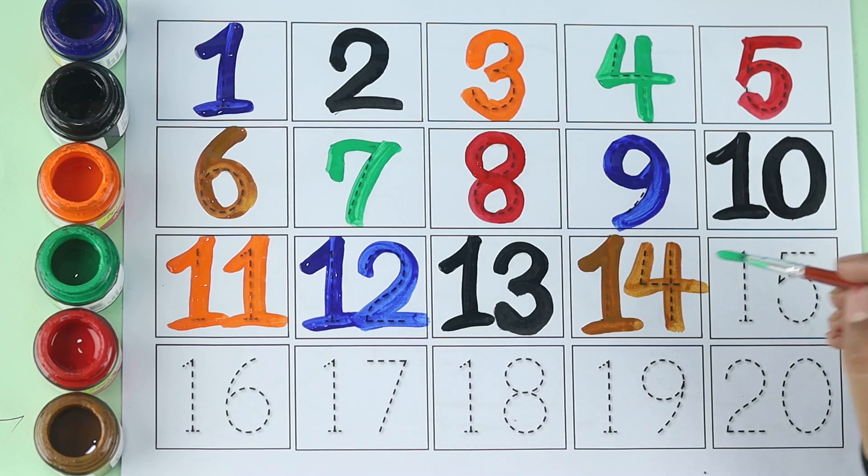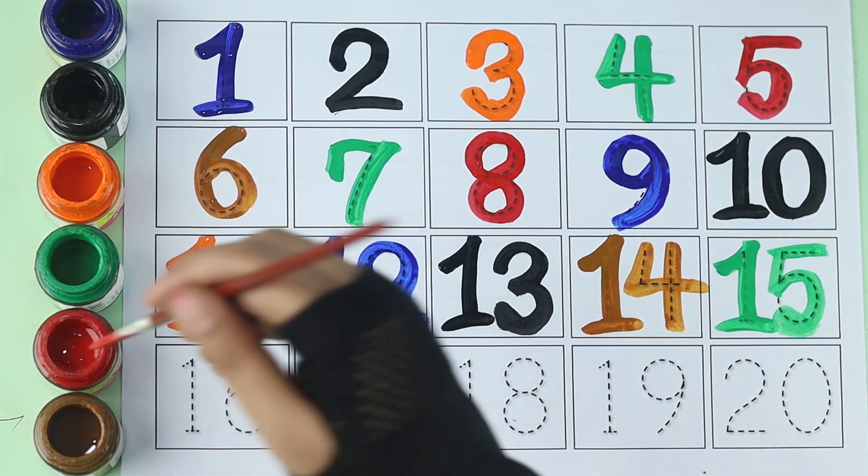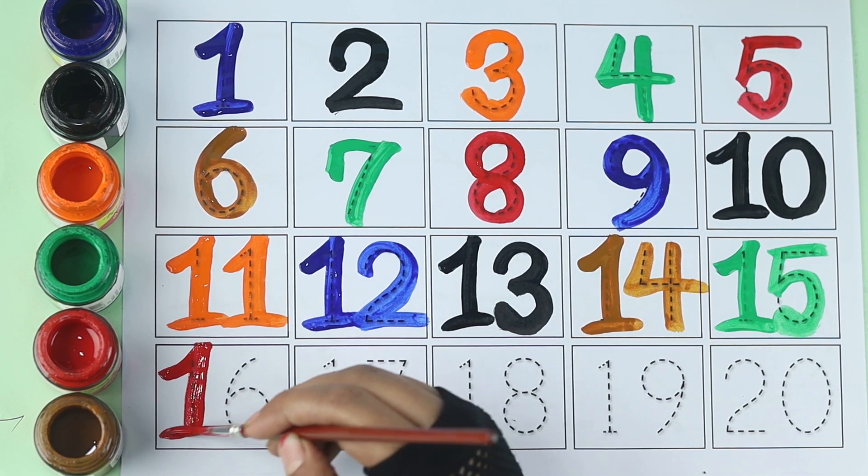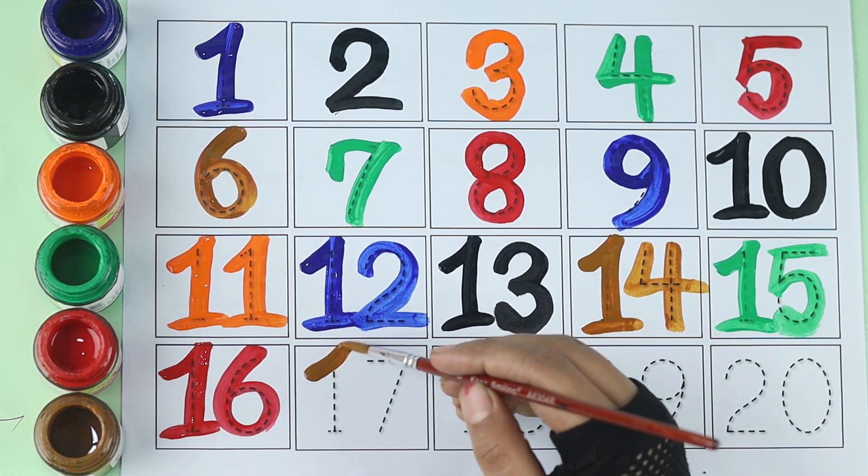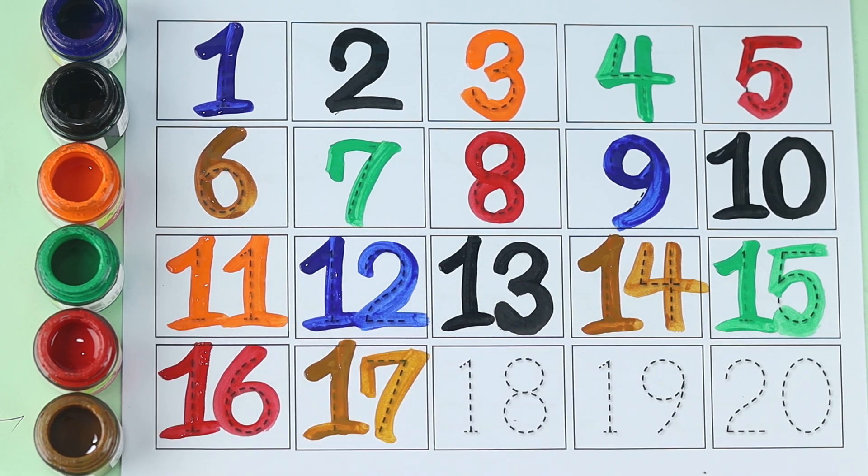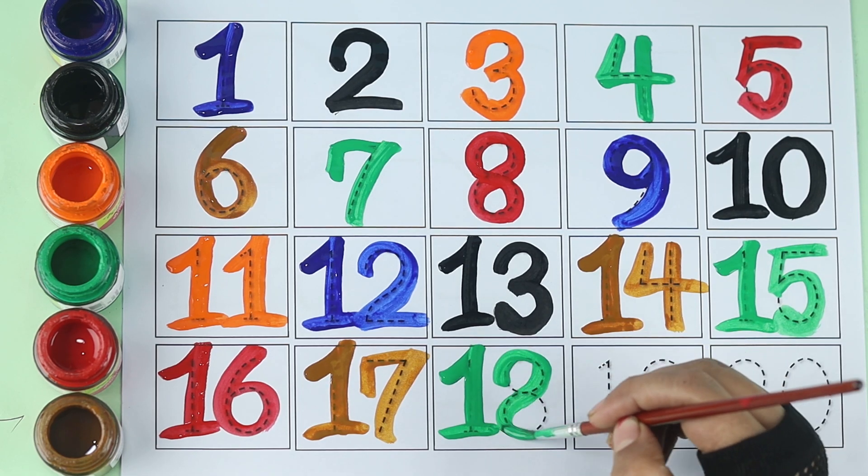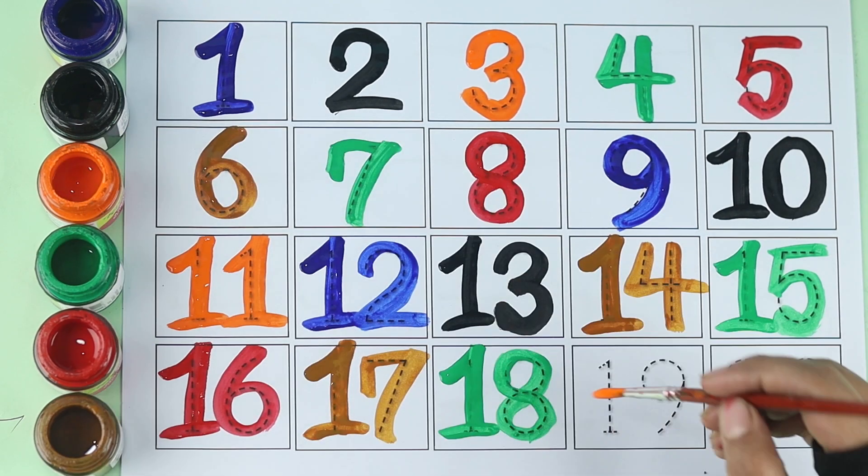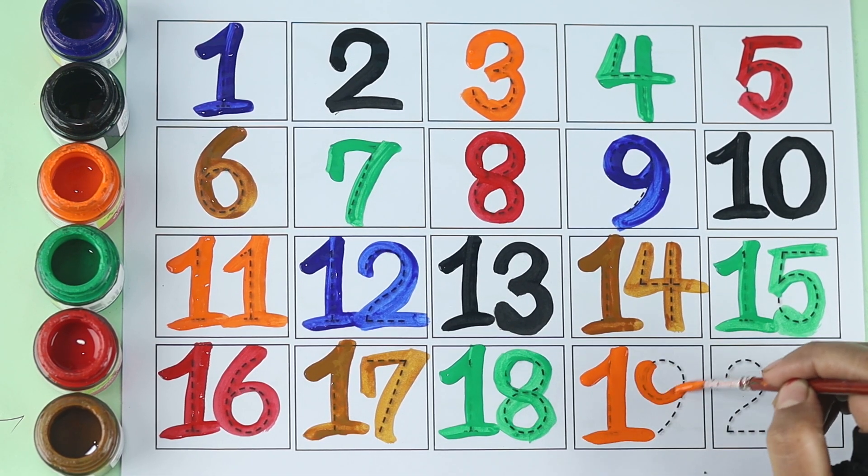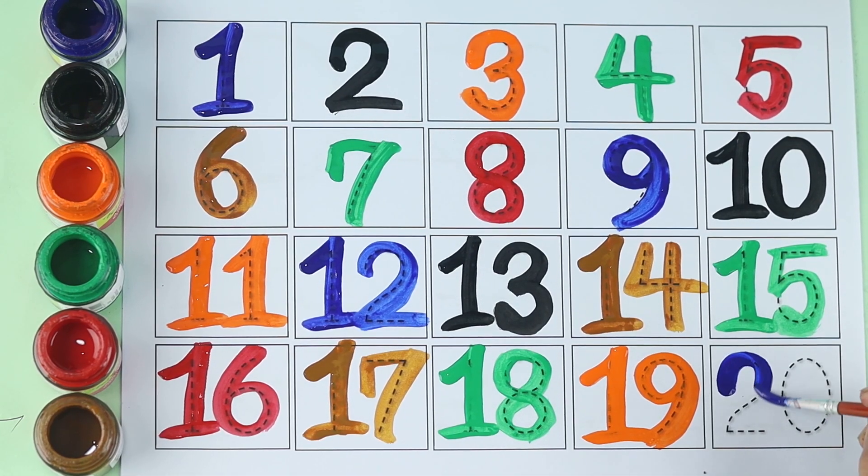Green color, green color, fifteen. Red color, sixteen. Brown color, seventeen. Green color, eighteen. Orange color, nineteen. Blue color, twenty.